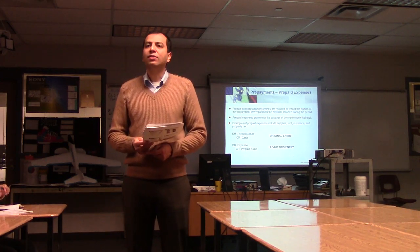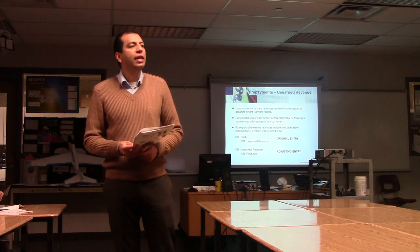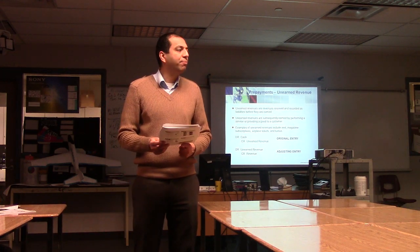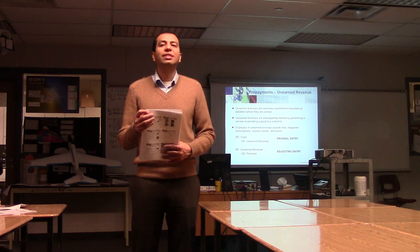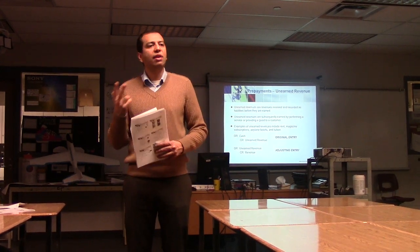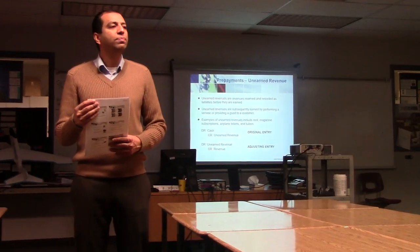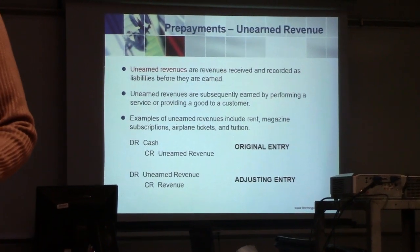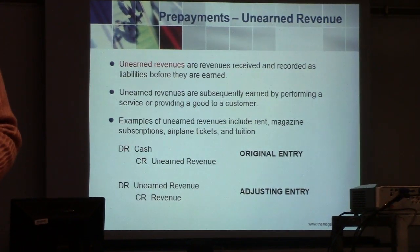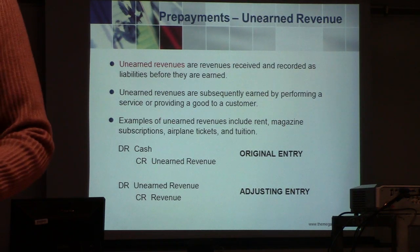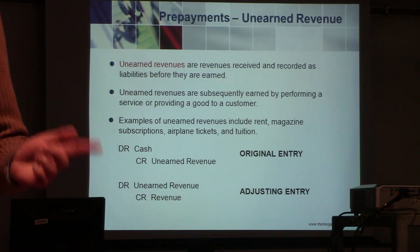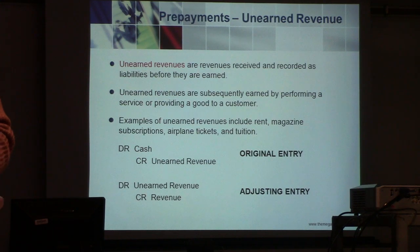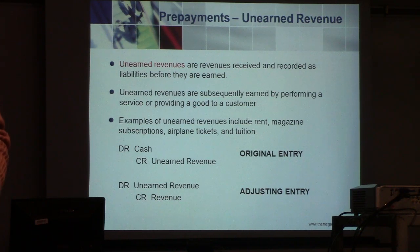Unearned revenue is the opposite. If you're the landlord and you've received money up front, that becomes unearned revenue for you because the year hasn't finished yet. Unearned revenue is a liability — if prepaid expense is an asset, unearned revenue is a liability — because the money can be asked back at any time. As time goes by, you recognize the revenue from this liability account. At month end, the tenant recognizes rent expense, and the landlord recognizes revenue from the unearned revenue liability account.